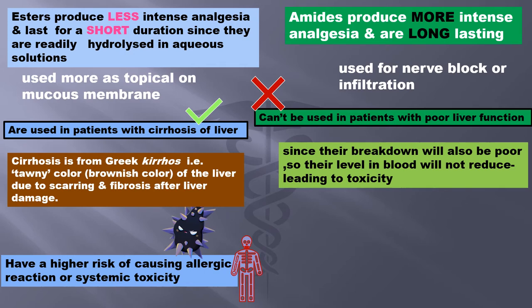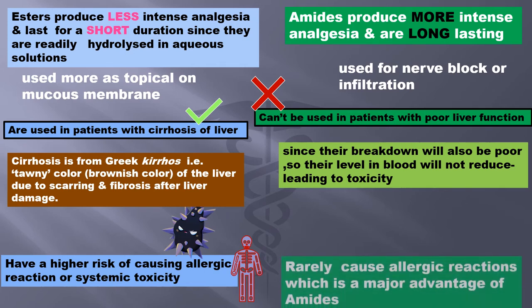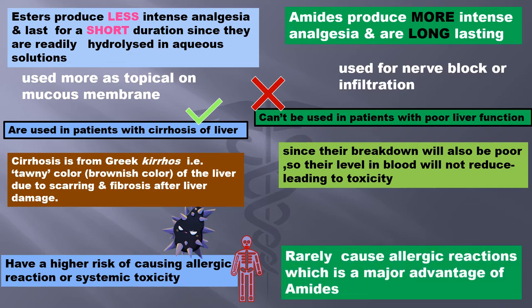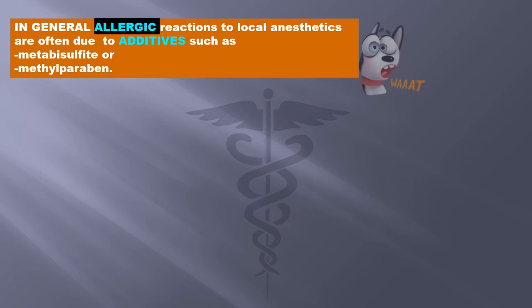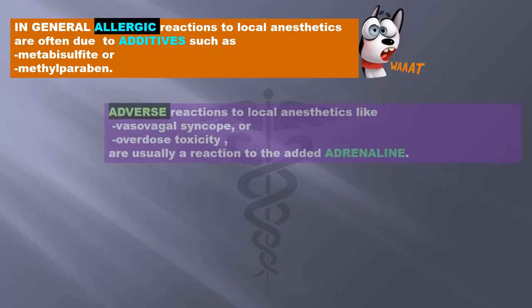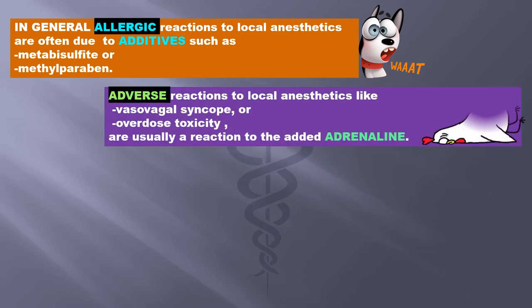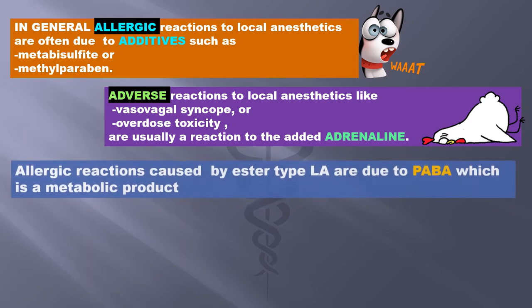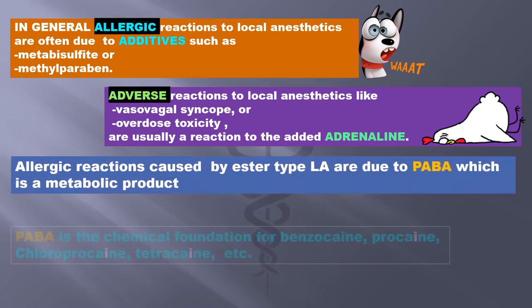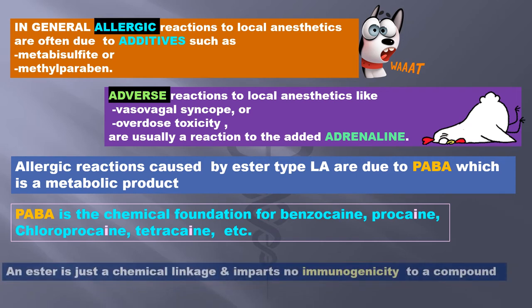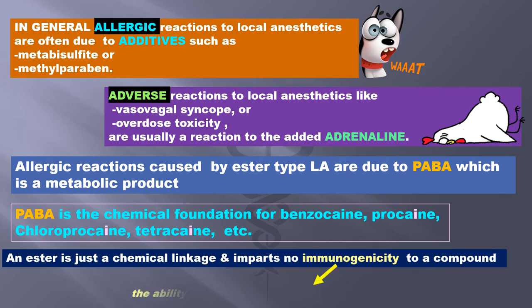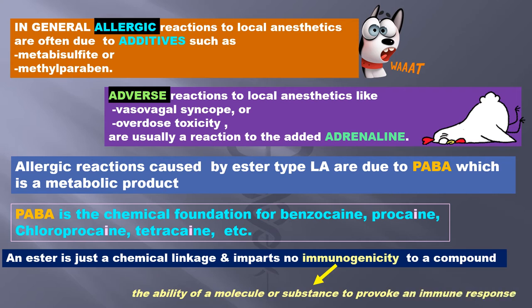Esters have a higher risk of causing allergic reaction or systemic toxicity, while amides rarely cause allergic reaction — a major advantage of amides. In general, allergic reactions to local anesthetics are often due to additives such as metabisulfite or methylparaben. Adverse reactions like vasovagal syncope or overdose toxicity are usually a reaction to added adrenalin. Allergic reactions caused by ester-type LA are due to PABA, a metabolic product. PABA is the chemical foundation for benzocaine, procaine, chloroprocaine, tetracaine, etc. An ester is just a chemical linkage and imparts no immunogenicity — that is, no ability to provoke an immune or allergic response — to a compound.